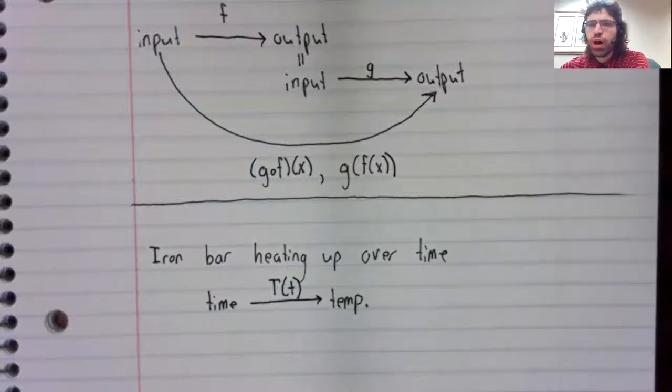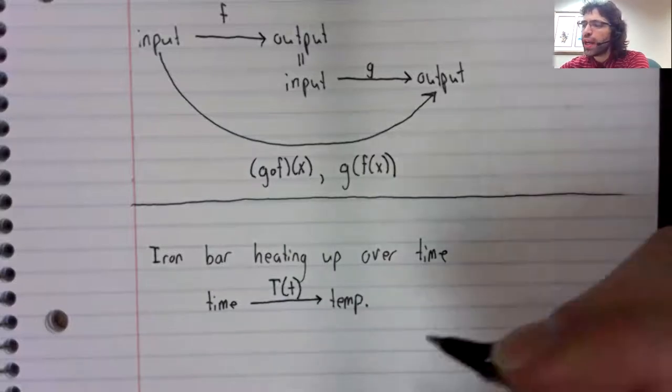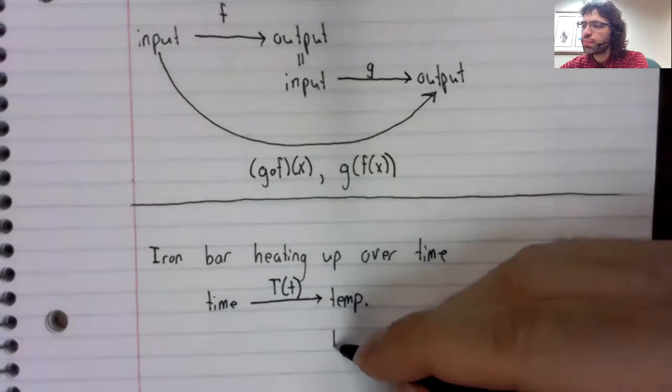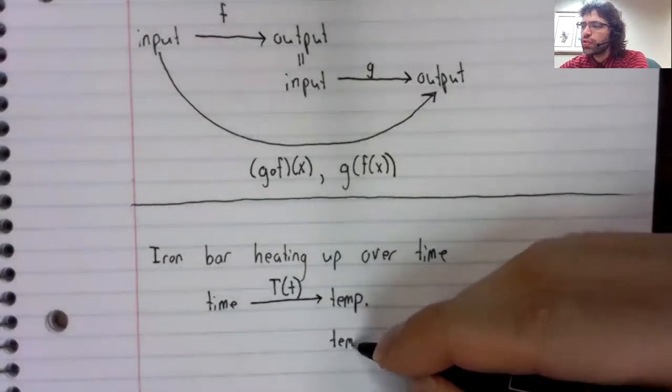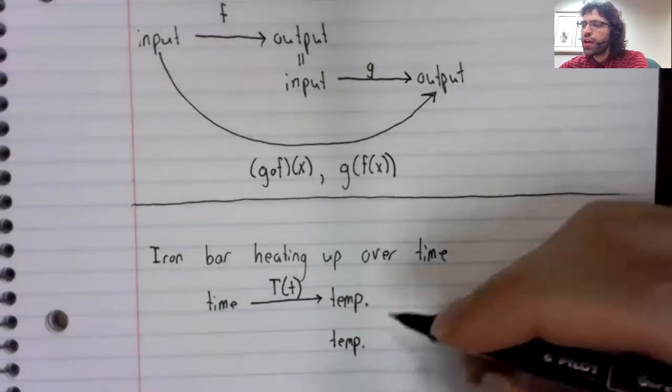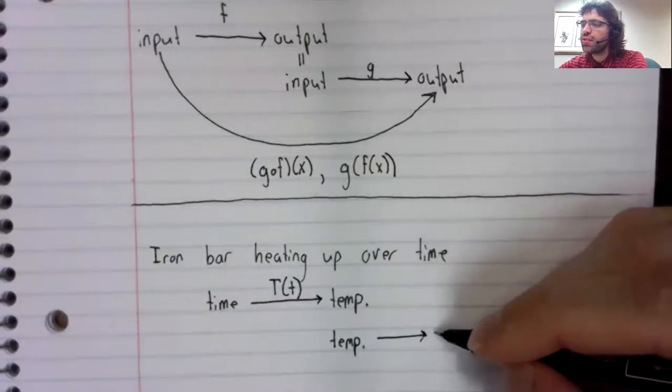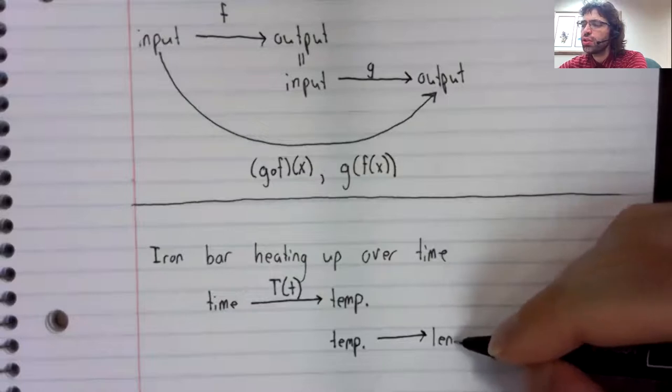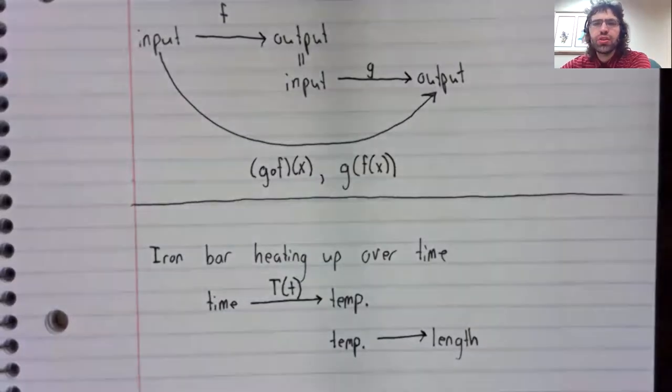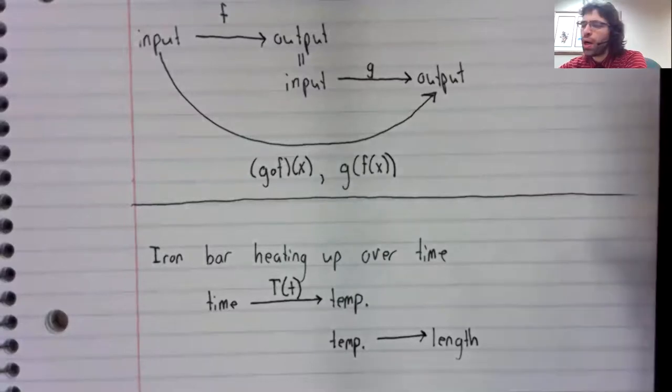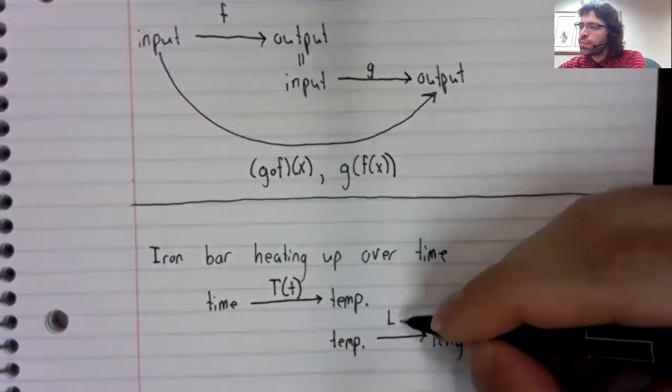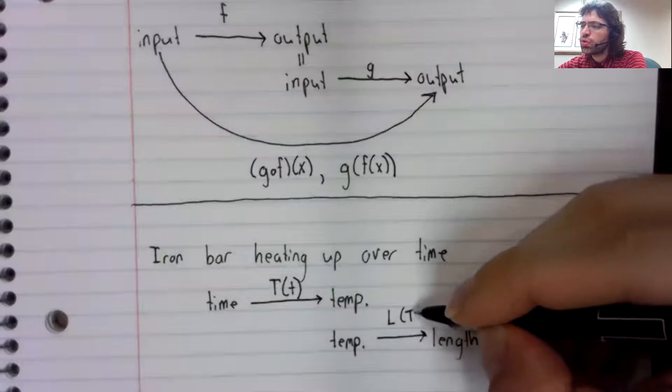Now, as the iron bar heats up, its length changes. That's a property metals have called thermal expansion. So we can define a function that takes temperature as its input and gives the length of the metal bar as its output.